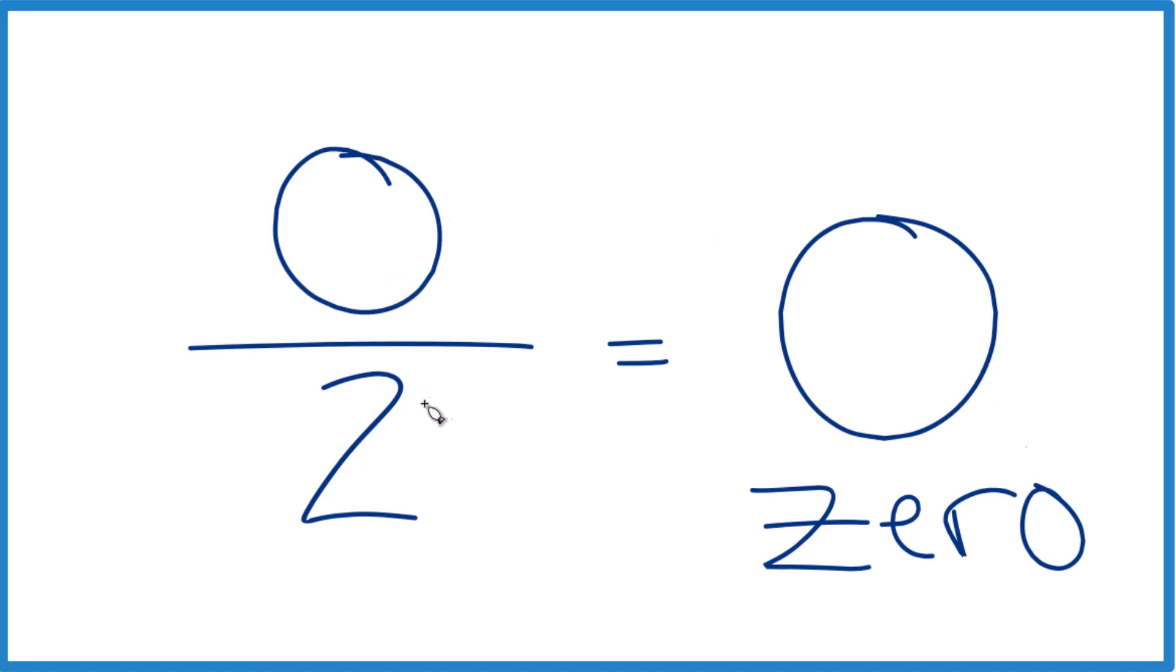0 over any number, that's going to equal 0 with just one exception, a special case. 0 over 0, we say that's undefined.